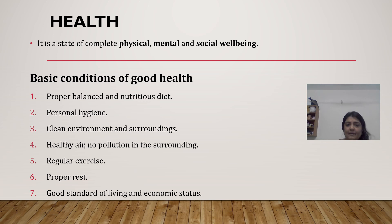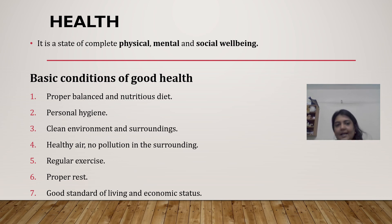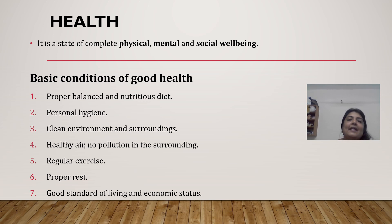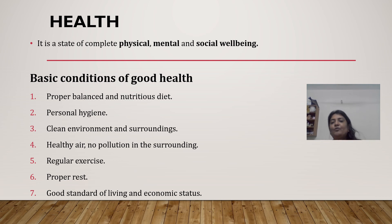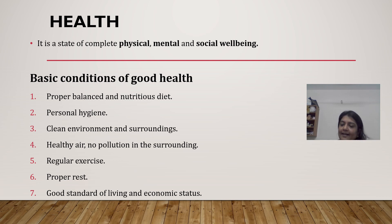Now we will see the basic conditions of good health. The first one is a proper balanced and nutritious diet. A proper balanced and nutritious diet means eating a wide variety of foods in the right proportions and consuming the right amount of food and drink to achieve and maintain a healthy body weight. A balanced diet fulfills all of a person's nutritional needs. Healthy foods comprise foods from five groups: fruits, vegetables, proteins, grains, and dairy.